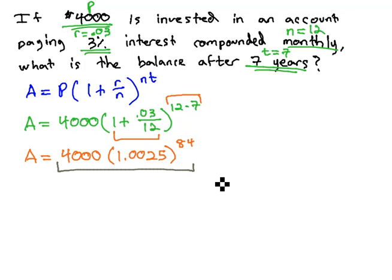And then we can calculate all of that. Make sure you know how to do that on your calculator. Some calculators require you to do the 1.0025 to the 84th first, and then multiply the answer by 4,000. Other calculators you can just do 4,000 times 1.0025 to the 84th power.